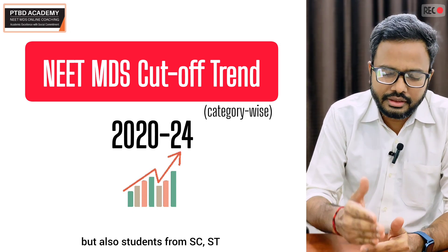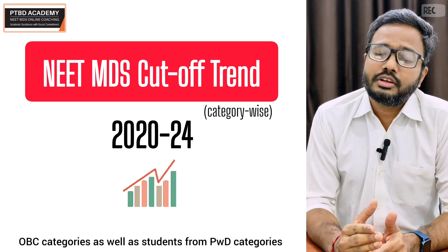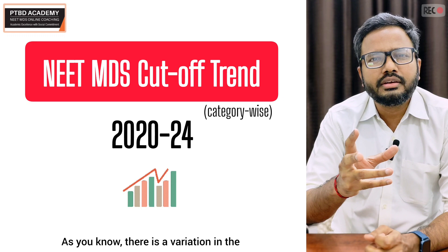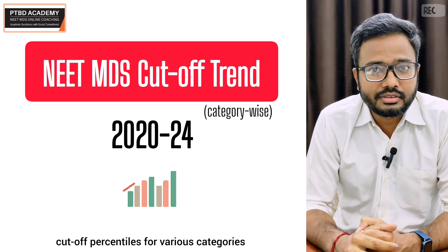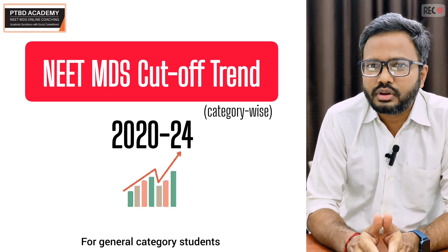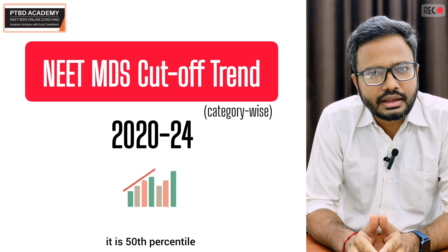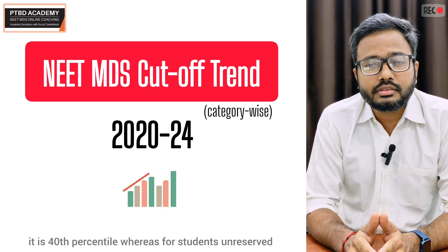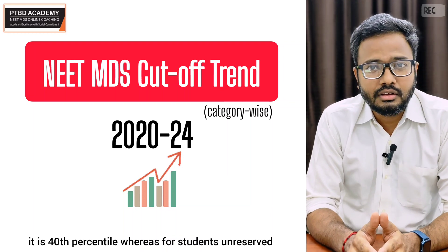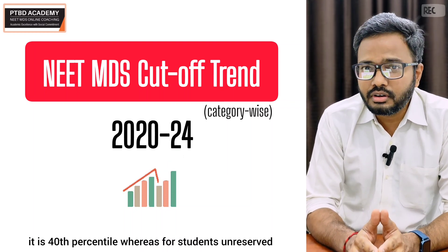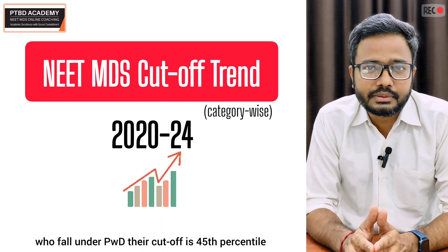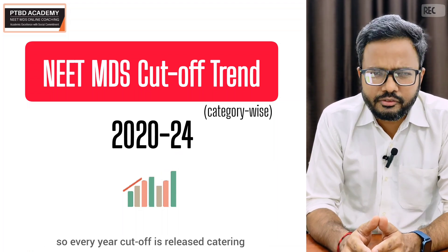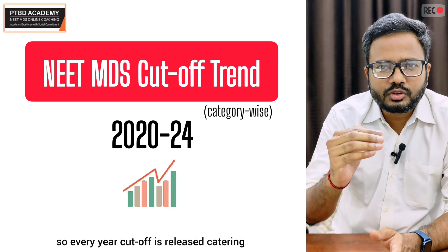We'll cover students from SC/ST, OBC categories as well as students from PWD categories. As you know, there is a variation in the cutoff percentiles for various categories. For general category students it is the 50th percentile, but students with reservations such as SC/ST or OBC have a lower cutoff, and unreserved students who fall under PWD have a cutoff at the 45th percentile.